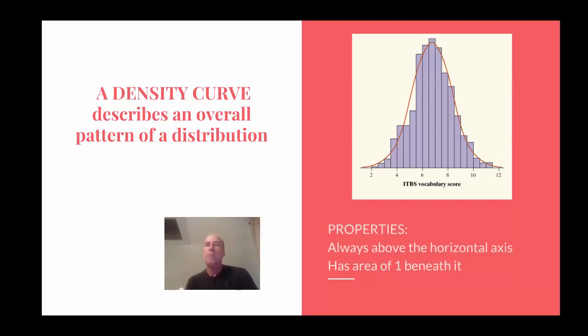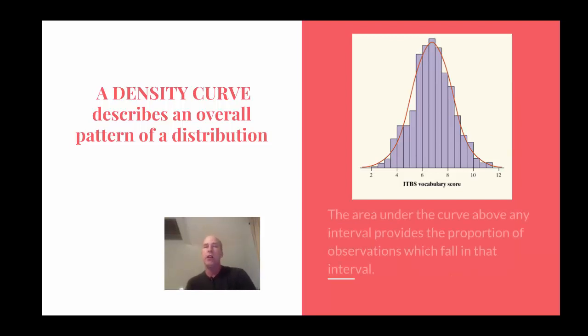There's a couple properties. The first property is density curve is always above the horizontal axis and will never venture into the negative y direction. And it has an area of 1 beneath it. And that's kind of big, because that means that we can relate area to percentile now. The area under the curve above any interval provides a proportion of intervals which fall in that interval. So we can talk about percentiles as area and percentages of observations as area.